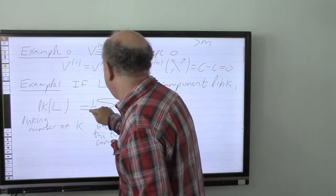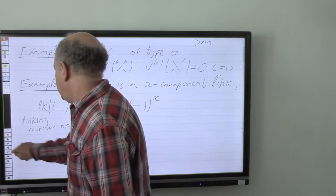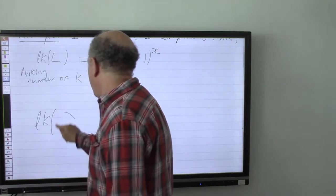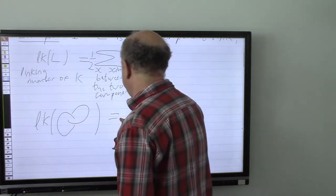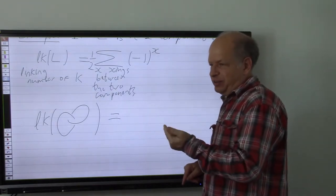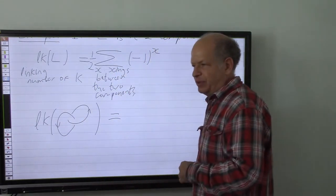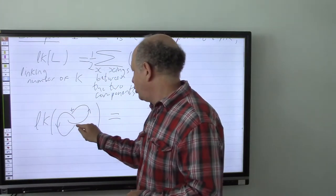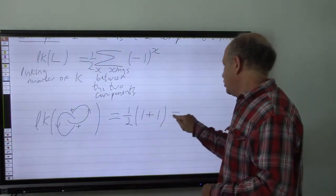The sign of the crossing is defined exactly as before. For example, the linking number of the so-called Hopf link, oriented in a specific way: both crossings are positive crossings, so the linking number is half of one plus one, which equals one.